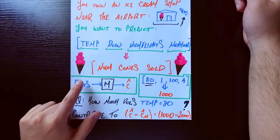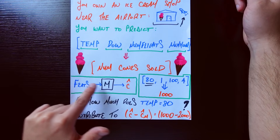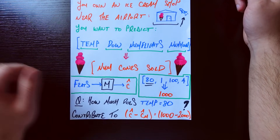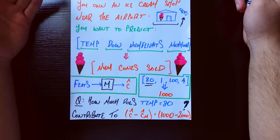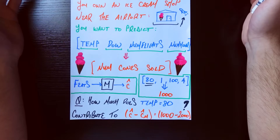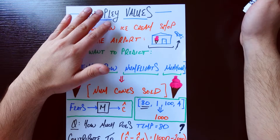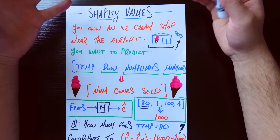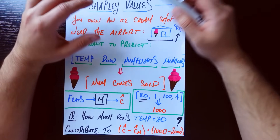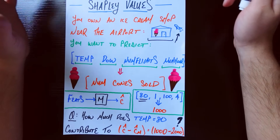We want to build some kind of model that uses these four features to predict the number of cones sold — features go in, this is your model, and the prediction of number of cones sold comes out. I've very purposely drawn this model as a black box because it literally does not matter what your model is. That's one of the beautiful things about Shapley values: it is what's called model agnostic, which is just a fancy way of saying it doesn't matter what your model is — this process is going to be the same.